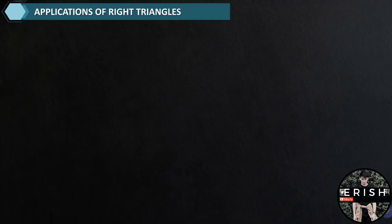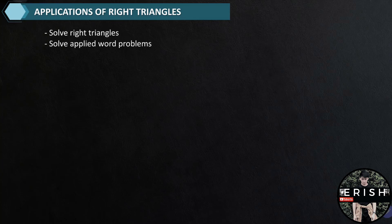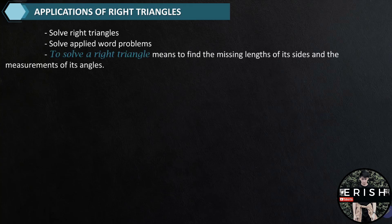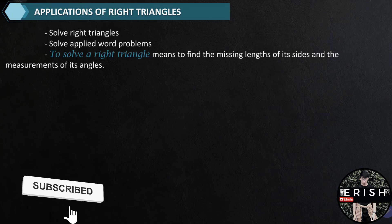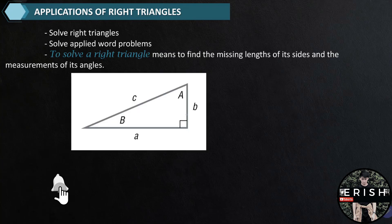Using applications of right triangles, we will be able to solve right triangles and applied word problems. To solve a right triangle means to find the missing lengths of its sides and the measurements of its angles. And since we will discuss only right triangles, we know one angle is a measure of 90 degrees.